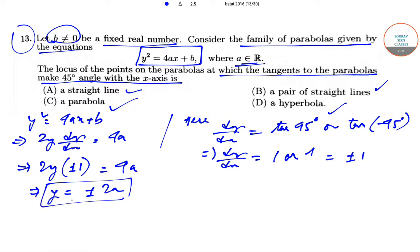Now upon putting this value in y² = 4ax + b, this will give us that 4a² = 4ax + b, and that will give us that x = (4a² - b)/(4a).